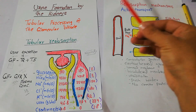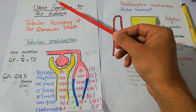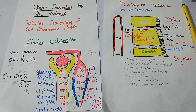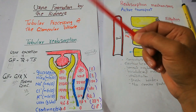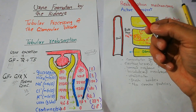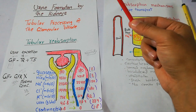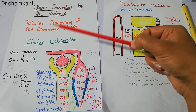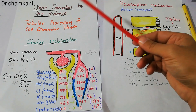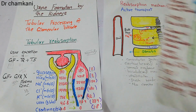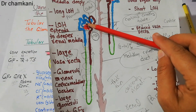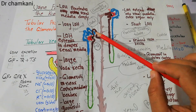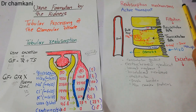We have started urine formation by kidneys, and we have begun discussing tubular processing of glomerular filtrate. In our previous lectures we discussed in detail the filtration process. If you have not watched those lectures you can watch them for proper understanding of urine formation. The first step, the filtration step, has been discussed in detail, and now we are focusing on tubular reabsorption. Filtration occurs in the nephron, and then as the filtrate moves along the nephron tubules, different substances are reabsorbed — that is tubular reabsorption, the second step.